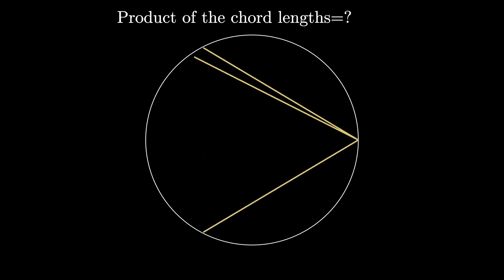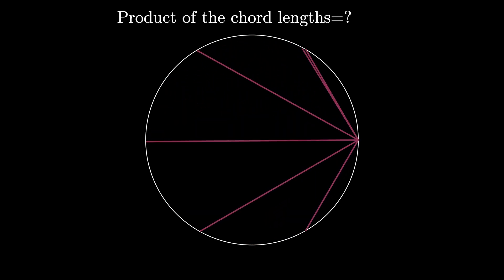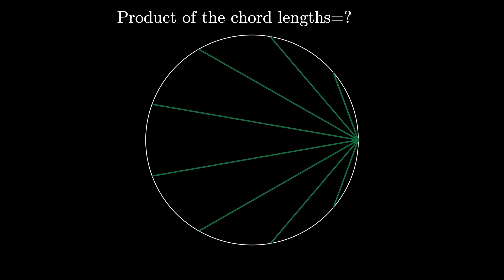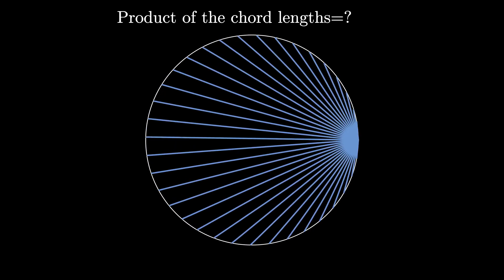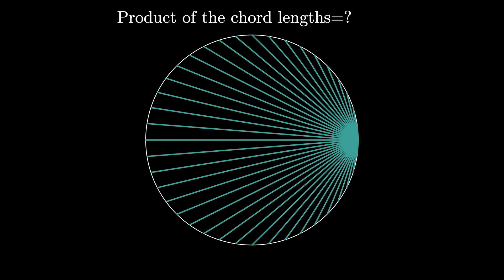Our goal is to answer this problem when there are two points, or possibly three points or four points or five points, or really any number of points equally spaced around the circle. Can we find the product of the chord lengths no matter what n value we pick?